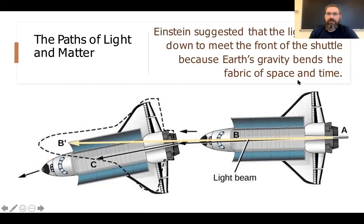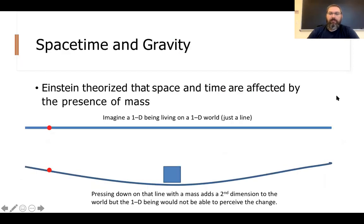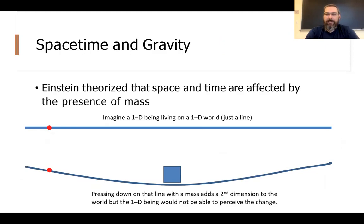What does it mean to bend the fabric of space and time? Here's an analogy from a cosmology course: we live in a three-dimensional world. You can describe any position as forward/backward, left/right, and up/down. Now imagine you lived in a one-dimensional world — only one dimension of motion, just forward and backward along a line. A one-dimensional being would be a point or line with no height and no width.